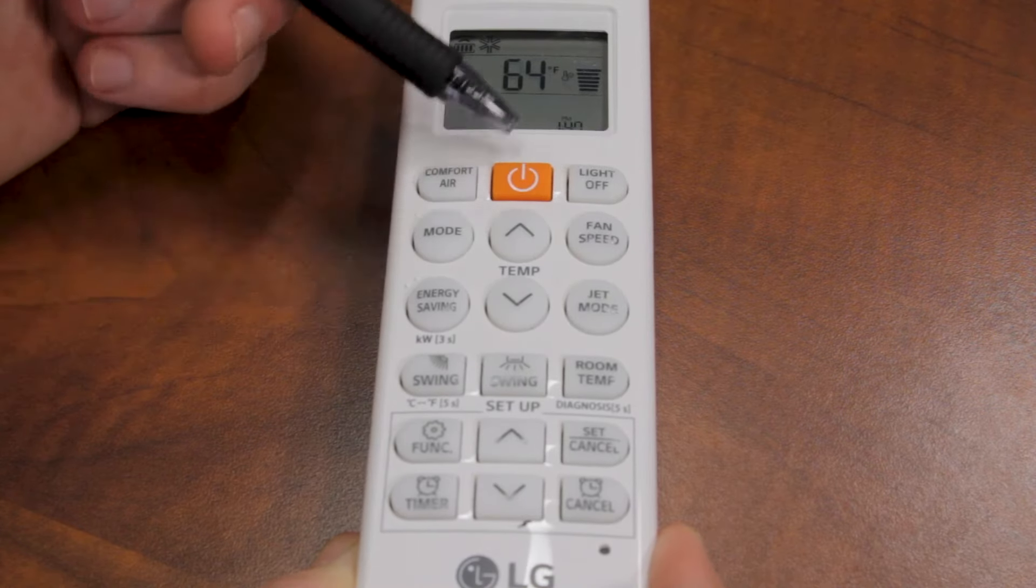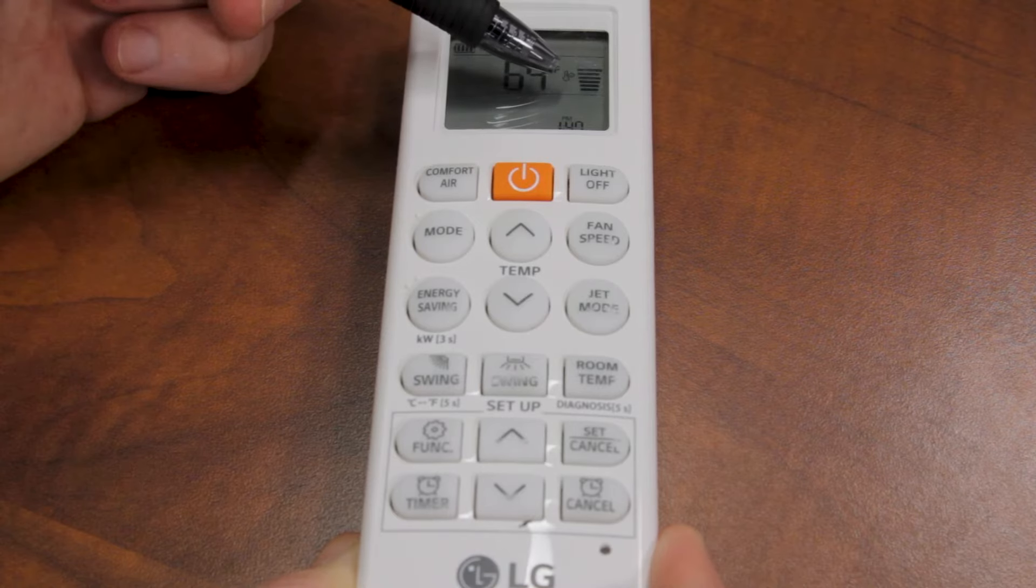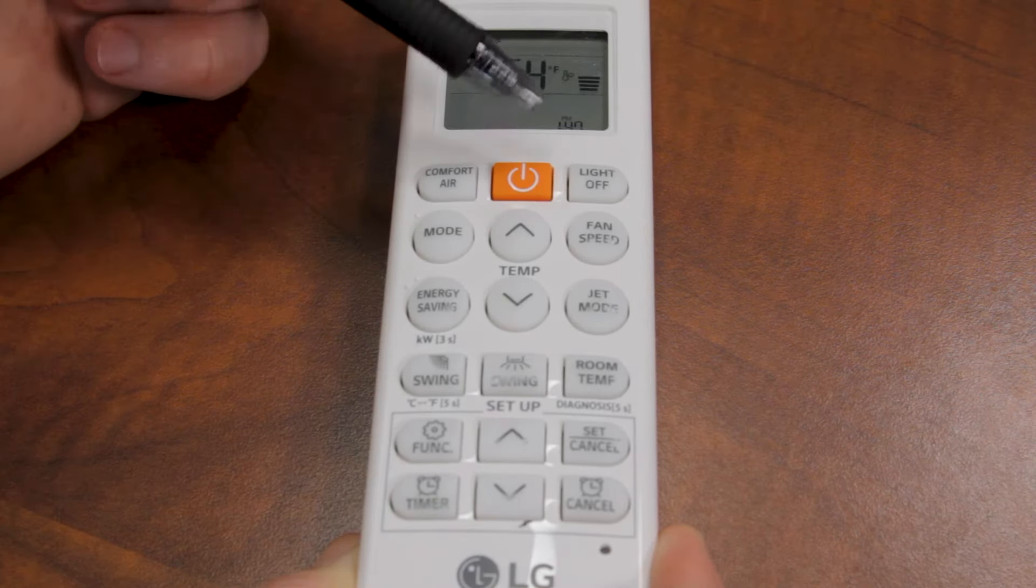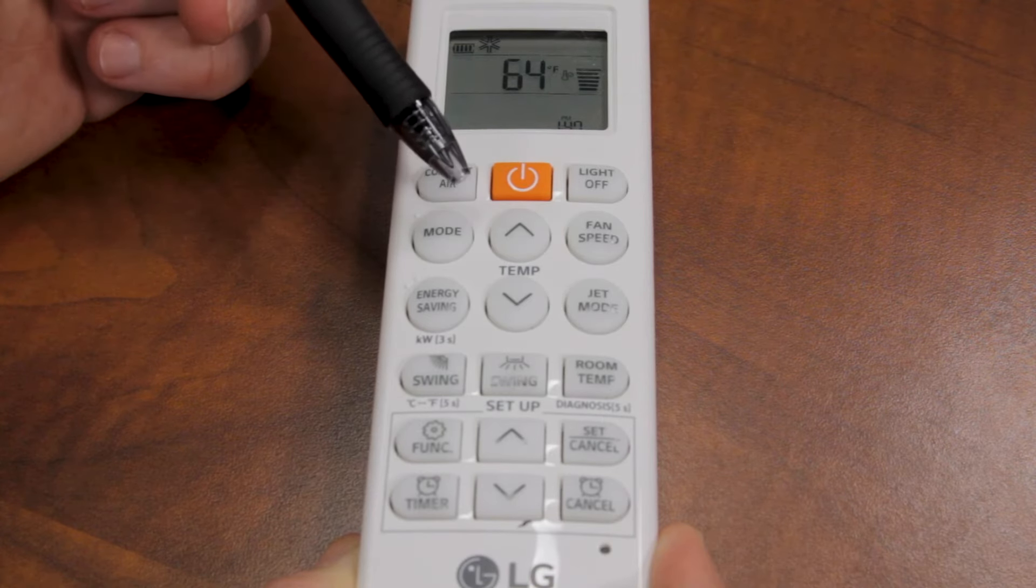Once it goes all the way to the top, you press it again, and it's going to go into an auto mode. As you can see, the bars are flashing. What that means is the fan is going to ramp up and down by itself depending on the temperature of the room.